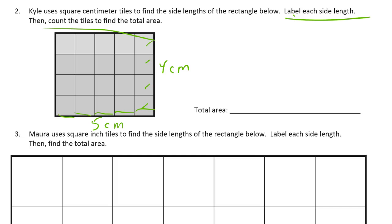And since this is a rectangle, we know that if the right side is four centimeters, the left also has to be four centimeters. And if the bottom is five, the top has to be five centimeters. So now the area is going to be in square centimeters.